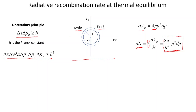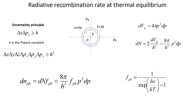To determine how many photons actually reside in those available states, we multiply by the probability function for photon energy distribution. This function is the Bose-Einstein distribution: the denominator is exp(hν/kT) minus 1.